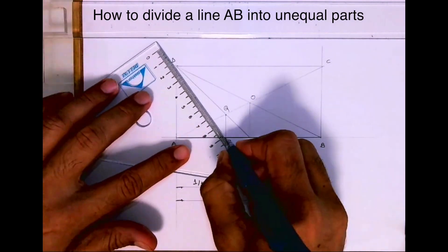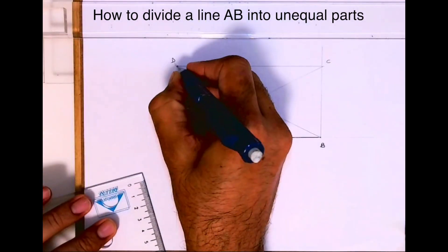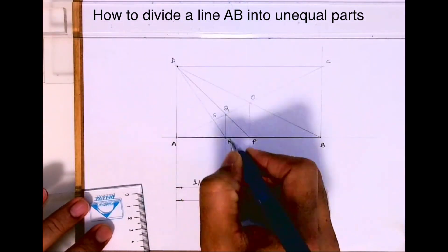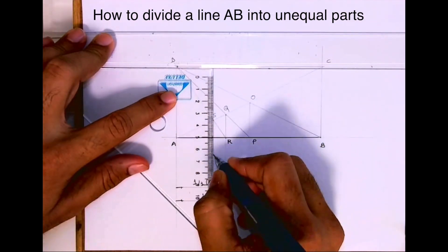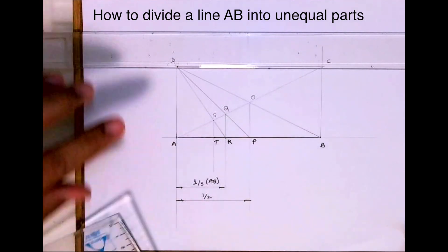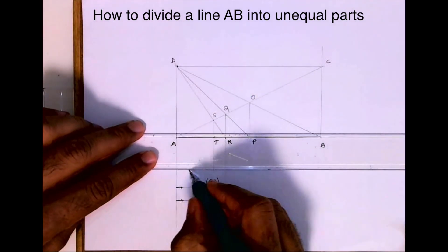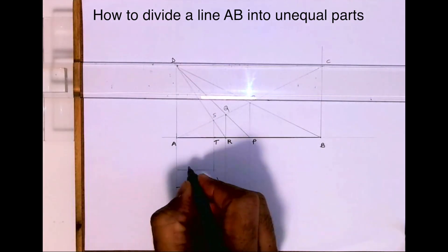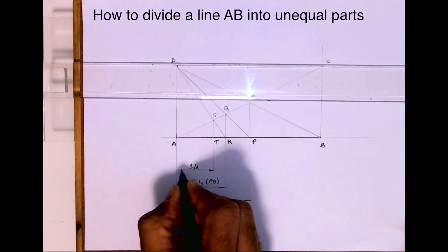Same way I will join D to R. Wherever it will cut, that will be point S. From S I will draw a vertical line. Wherever it will cut, that will be point T. So this is one fourth of AB.